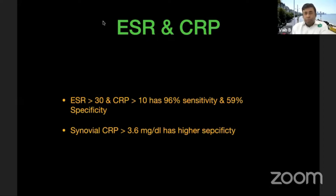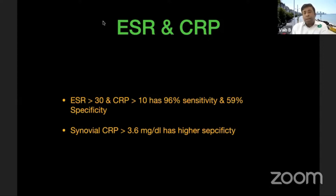ESR and CRP are the most commonly used markers. An ESR greater than 30 and a CRP greater than 10 have approximately 96% sensitivity and 59% specificity for diagnosing infection. Similarly, synovial CRP — which is increasingly being used — at more than 3.6 mg per deciliter has higher specificity than ESR and CRP combined in blood.